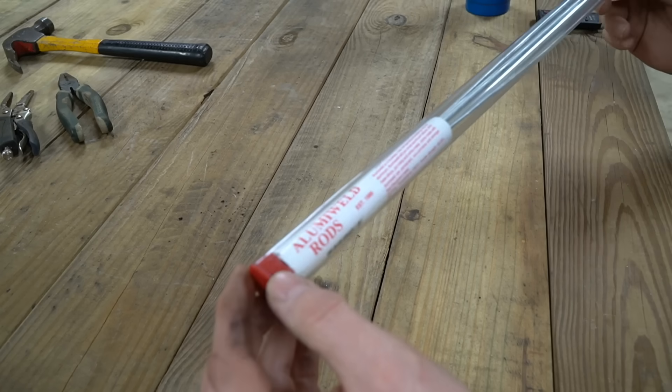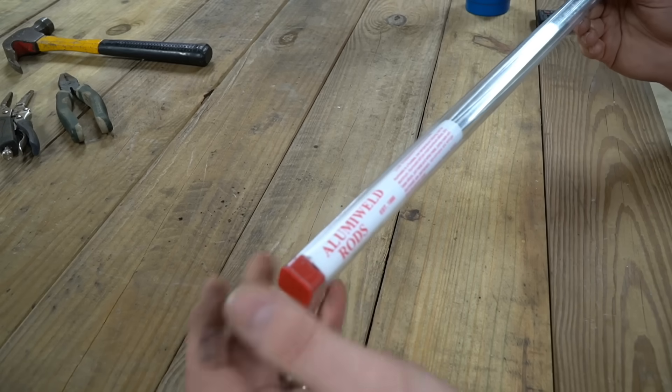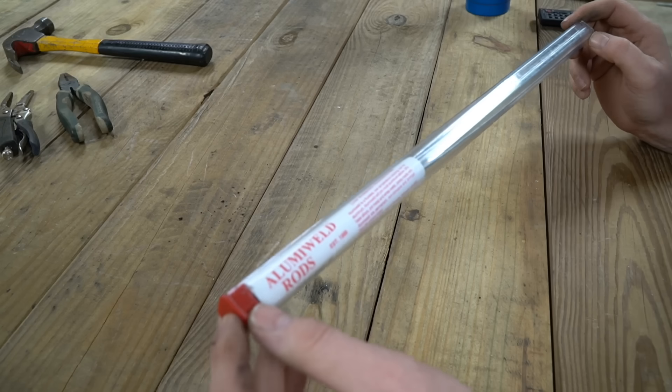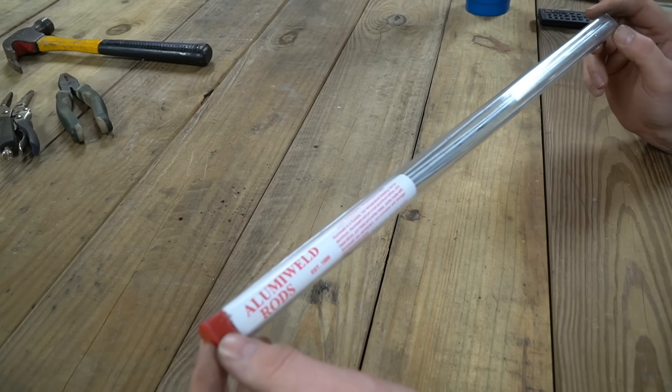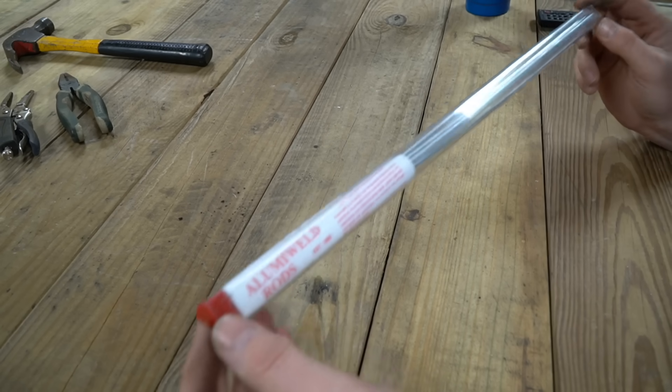It's nothing new. It's basically just brazing and these particular rods have kind of a secret sauce to them and that is they melt at 730 degrees Fahrenheit, which is a lot less temperature than what it would take to melt the aluminum itself that you're trying to weld.